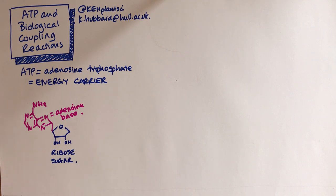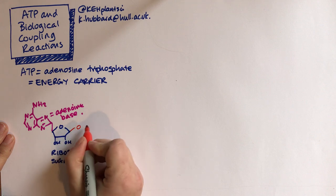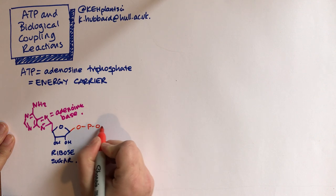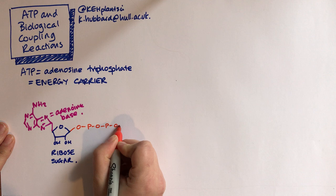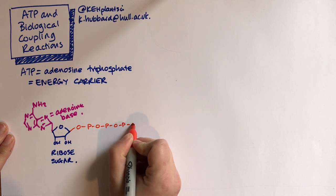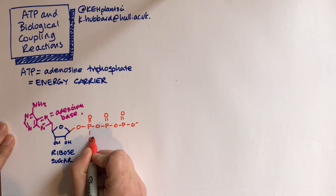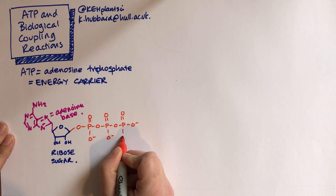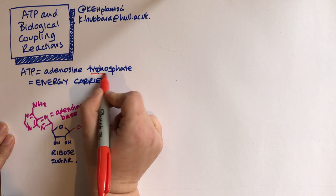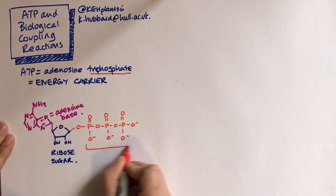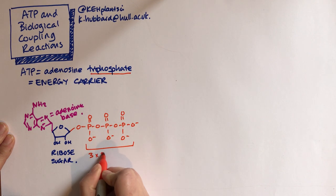But when ATP is being used as an energy carrier we're more interested in this end of the molecule where we have three phosphate groups. So just drawing those all out there. That triphosphate is three phosphate groups.